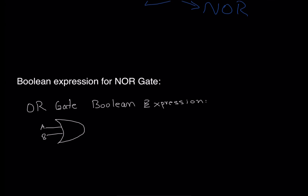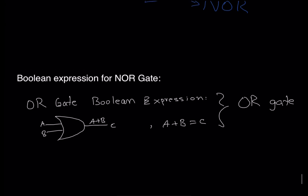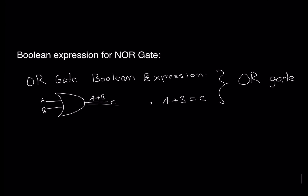Quick recap: for the OR gate, with inputs A and B, the Boolean expression is A plus B equals C. In English, A OR B yields an output of C. That is our OR gate. For the NOR gate, since it's a complement of the OR gate, we'll have the same A plus B but we will have to invert that.